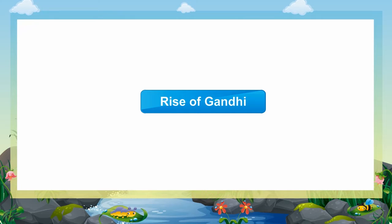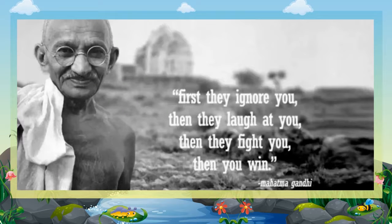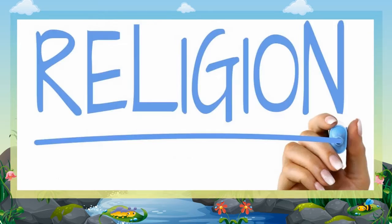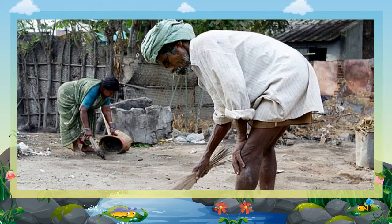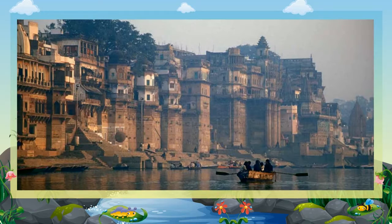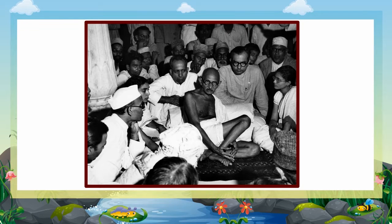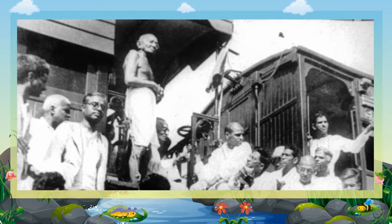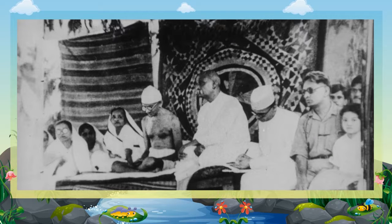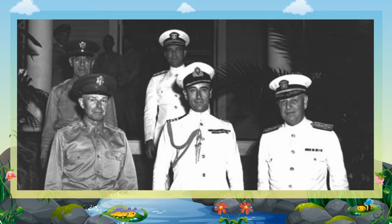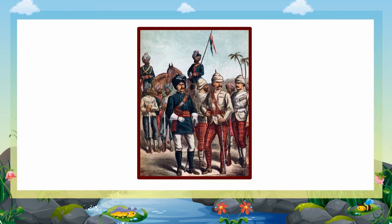Gandhi ji returned to India from South Africa in 1915. He was pained to see that people were divided on the basis of caste, religion, greed, gender, and color. Gandhi ji was shocked at the treatment meted out to the lower castes and untouchables. He renamed the untouchables 'Harijans,' meaning children of God. He demanded a 35 percent increase in the wages of mill workers in Ahmedabad. In South Africa, Gandhi ji had developed the technique of Satyagraha, based on truth and non-violence. Satyagraha was his most potent weapon against the British.